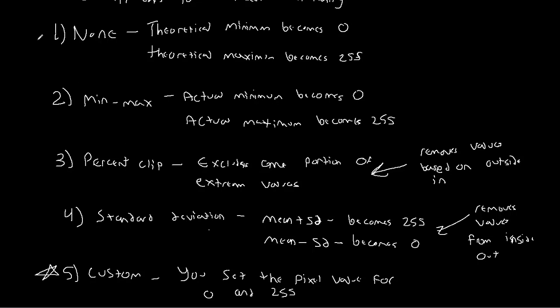These four are going to be the ones we're going to focus on: none, min-max, percent clip, and standard deviation. We're going to go through two examples of each to hopefully solidify what they mean and what they do to the image. I know there's a lot here, so hopefully this makes sense. As always, please reach out. Thank you.